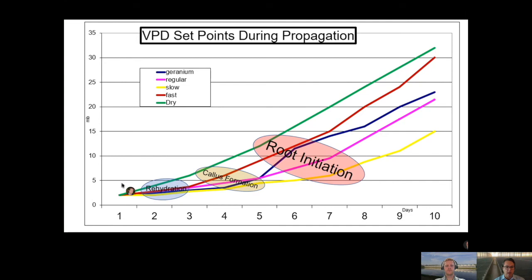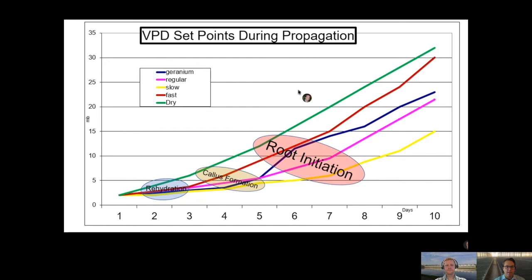Those first two days, we generally operate at a pretty wet setting — a very low VPD. Then as we get a little bit older, we start to dry it out just a little bit. This is where callus formation comes in, and this is generic for a handful of crops. Then root initiation a few days later — you can see we gradually get drier. Geraniums are always kind of a special case: they like to be wet initially, but then go dry really quickly once we get callus formation. Some crops don't like to be wet at all, so we make them very dry very fast. And some crops that have big leaves and are slow — we keep those wetter just a little bit longer. The point is you have to fine-tune it, and what we know is that plants respond best when we are dynamic with this moisture and humidity management over time.